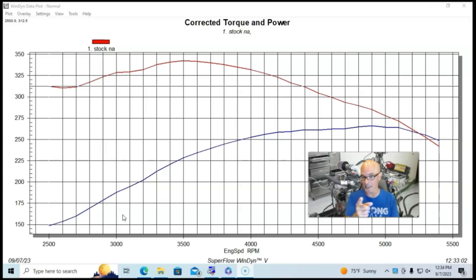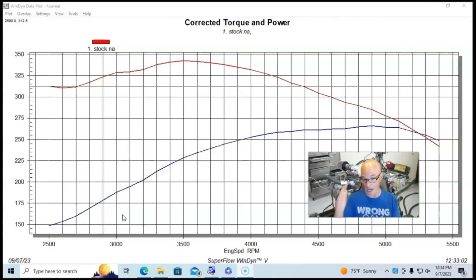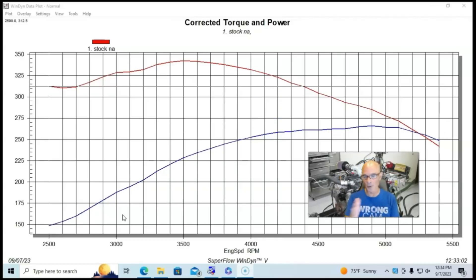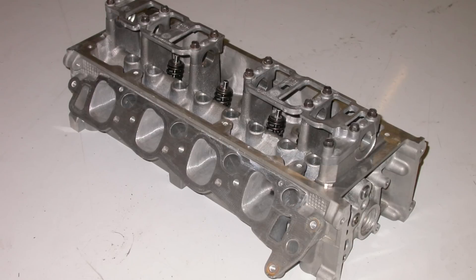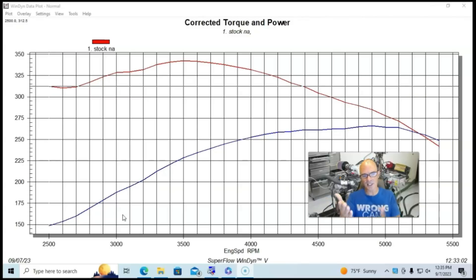We're going to start off with our naturally aspirated combination and this is a 4.6 two-valve, but it's actually not starting out with a PI motor. We started out with a non-PI motor, the non-power improved or performance improved. This was a 96 to 98 version and this was before they stepped up in the cylinder head flow and the camshaft and the intake manifold for the power improved version. This was actually a 98 version.